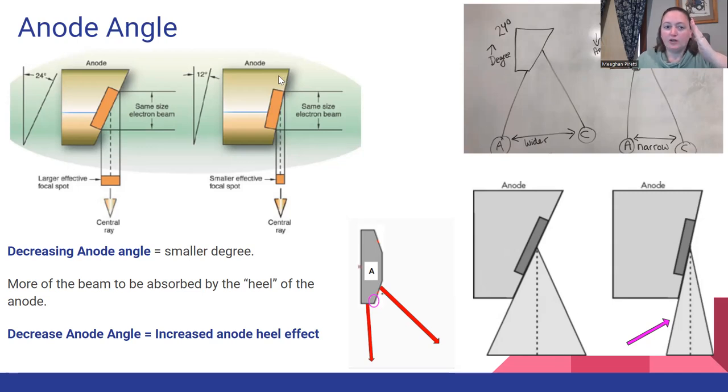A larger anode angle like this one over here kicks it back more and opens up this area here. By decreasing anode angle, so the smaller degree, we are increasing the anode heel effect. Why? Because the heel is more in the way.